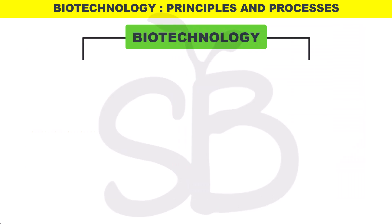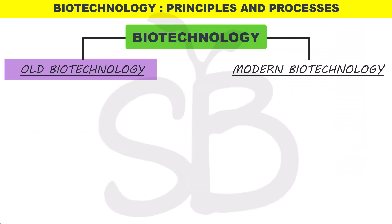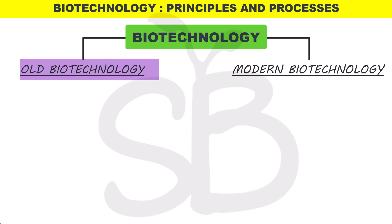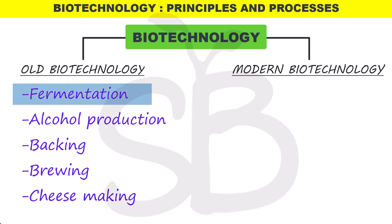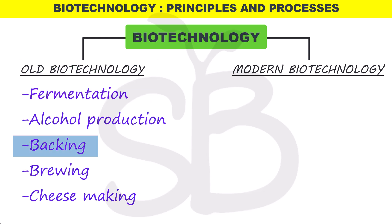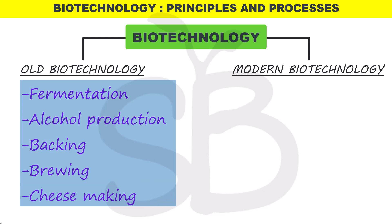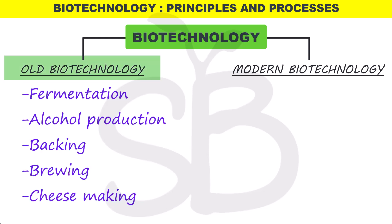Biotechnology has two types: old biotechnology and modern biotechnology. Old biotechnology includes processes like making curd or bread. Fermentation, alcohol production, baking, brewing, and cheesemaking are all considered old biotechnology.